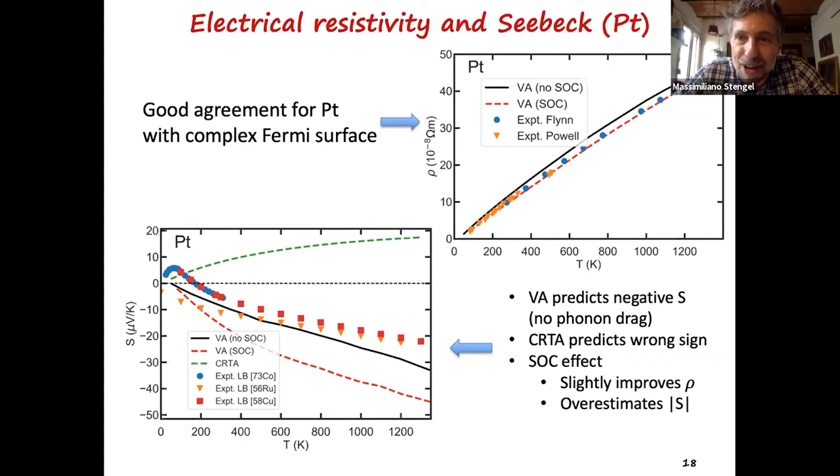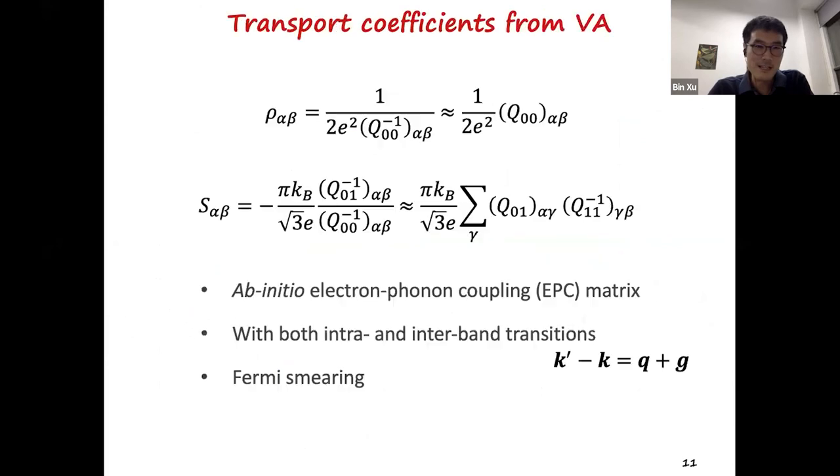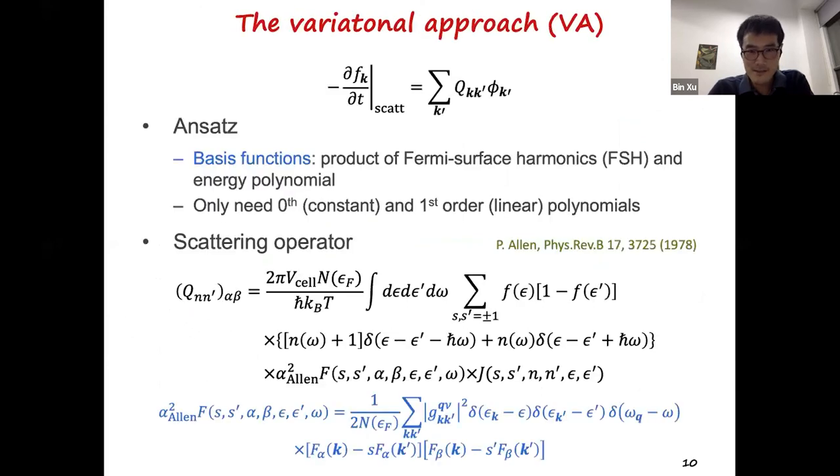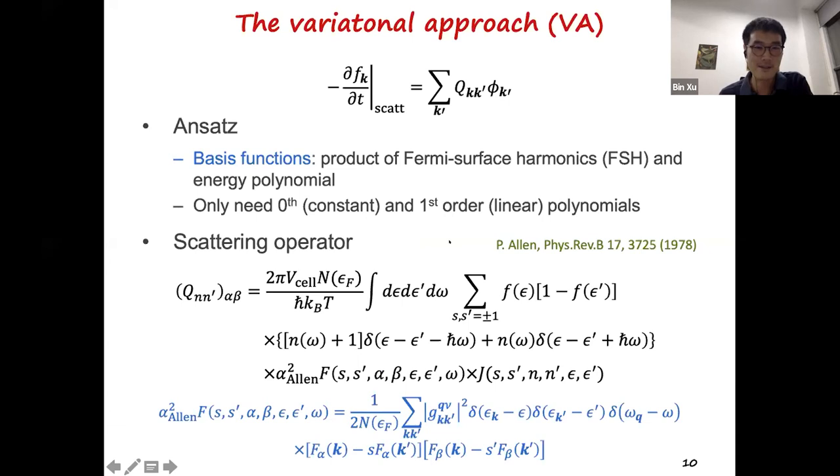Then there is another question from Vanina Recoules. How do you introduce the temperature in your calculation? It's actually from the distribution function. For the Fermi-Dirac distribution function, there's temperature there. And this, I think, is the phonon distribution function, also have temperature there. Also there's temperature here, you see. Okay. But for the band structure and phonons, they're 0K band structure and phonons. Okay.